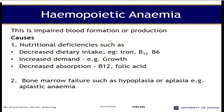Hemopoietic anemia is impaired formation or production. Causes include nutritional deficiencies such as decreased dietary intake of iron, B12, and B6. Then we have increased demand, for example growth. Then decreased absorption such as B12 and folic acid, which helps in the formation of blood. Bone marrow failure can also lead to hemopoietic anemia, such as aplastic anemia.